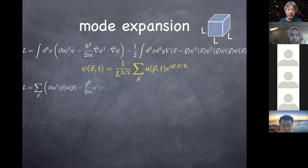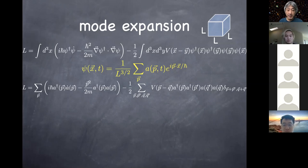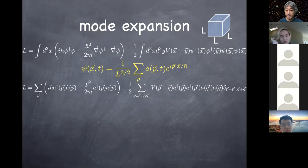The interpretation becomes clearer when I use this Lagrangian and plug in this mode expansion, writing everything in terms of a(p) instead of psi(x). The end result: the first part tells you that a and a-dagger satisfy the commutation relation as seen before, and because a and a-dagger commute only when their momenta are the same, that defines the commutation relations between a and a-dagger.